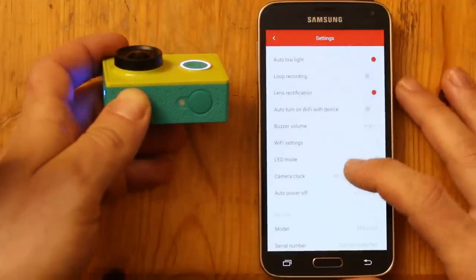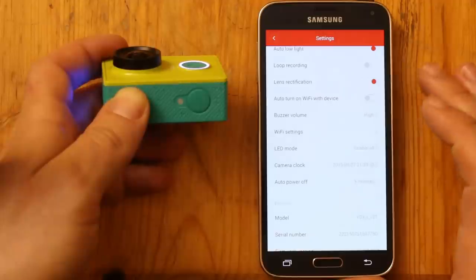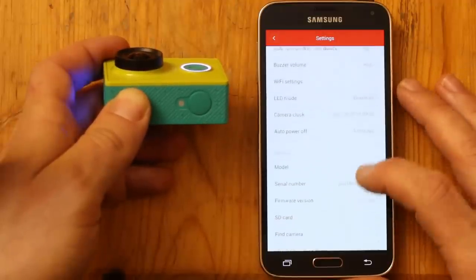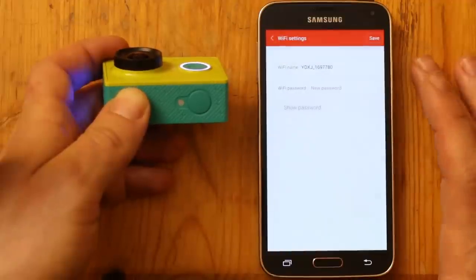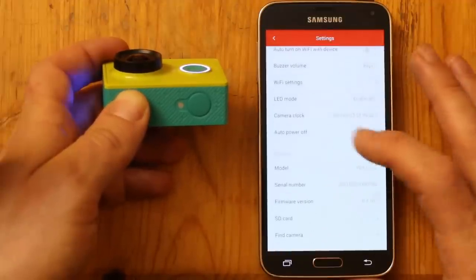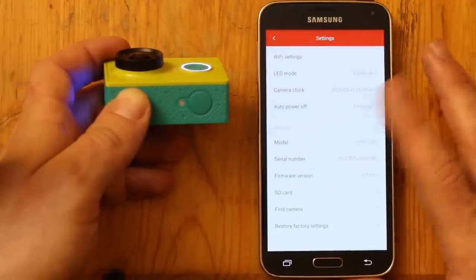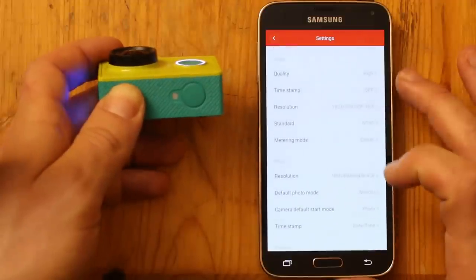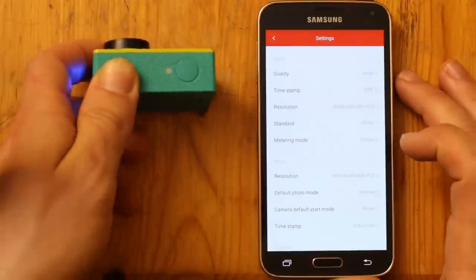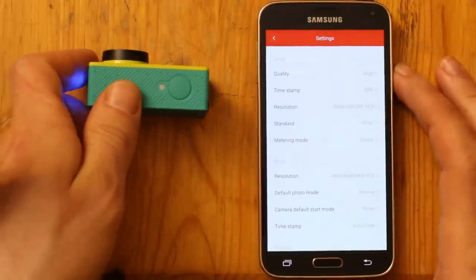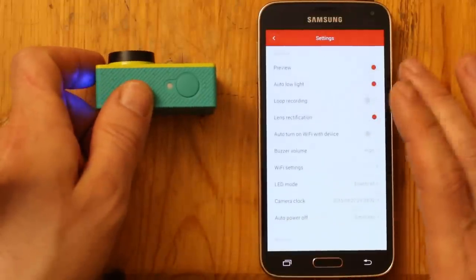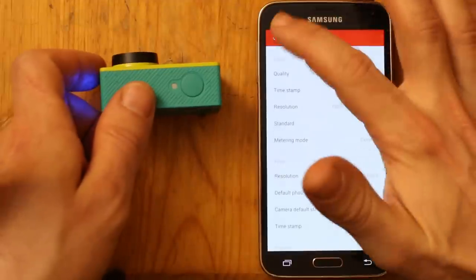The other options are fairly standard, auto power off time and Wi-Fi settings. You can set your password and your Wi-Fi hotspot name and all that stuff. So, the main things to consider here are the resolution available in the video and photo and the handy lens rectification mode.